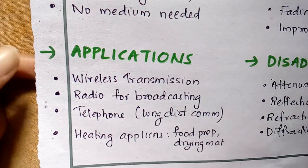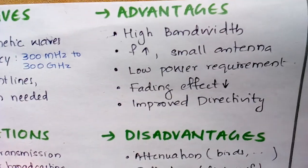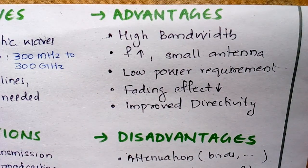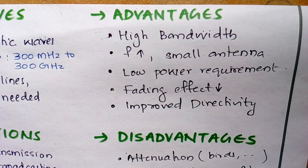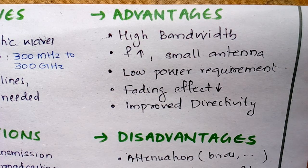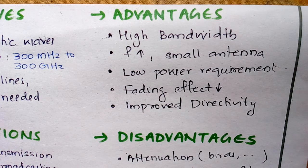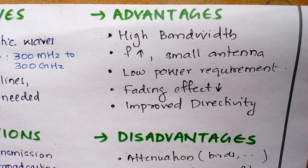Now next come the advantages. It has high bandwidth. I'll tell them in my own order so you can remember easily: first, bandwidth is high; next, power is high; gain is high; and improved directivity is also there. So four things are high — bandwidth, power, gain, and directivity.